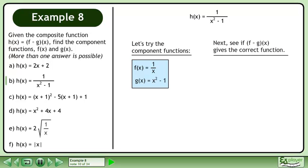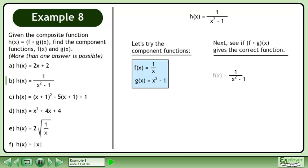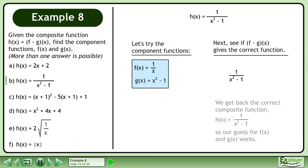Next, see if f gives the correct function. Plug g into f. We get back the correct composite function h equals 1 over x squared minus 1, so our guess for f and g works.